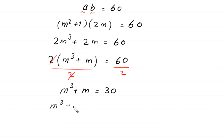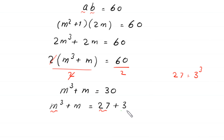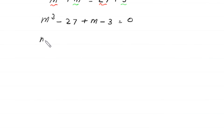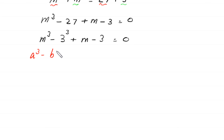Next, m^3 + m = 30. This 30 can be written as 27 + 3, where 27 = 3^3. So we write m^3 - 27 plus m - 3 = 0, which means m^3 - 3^3 + m - 3 = 0.